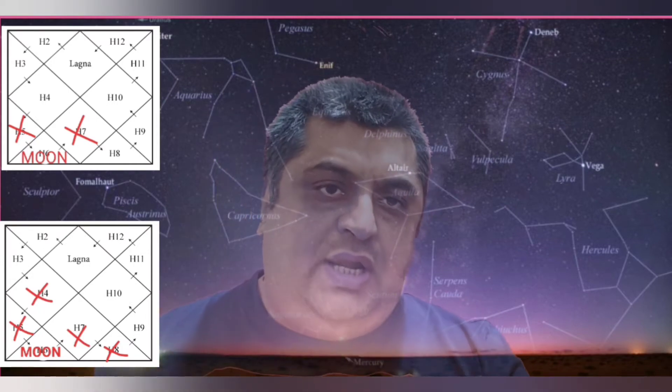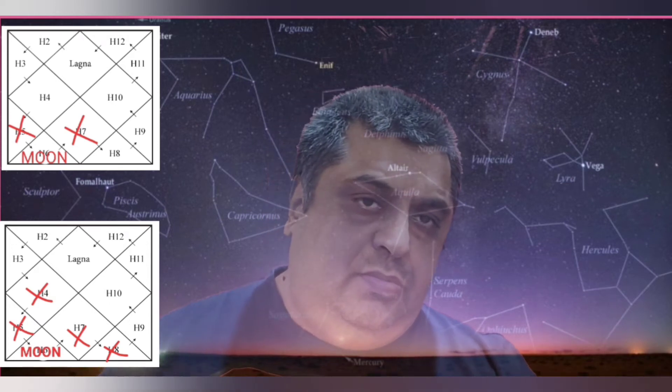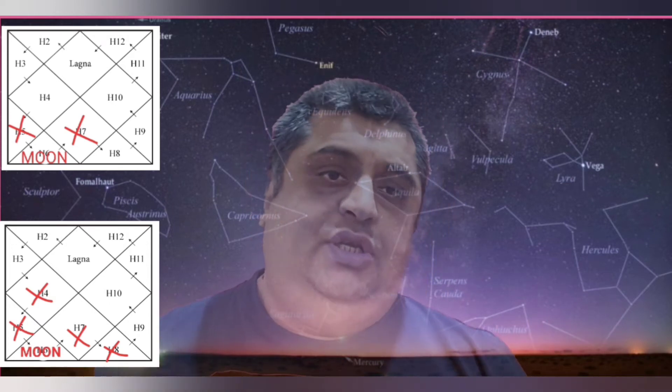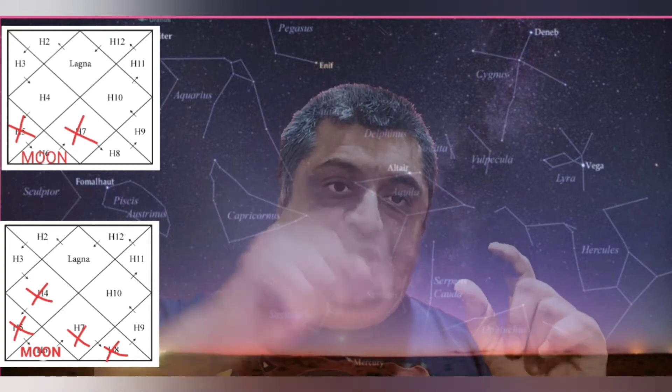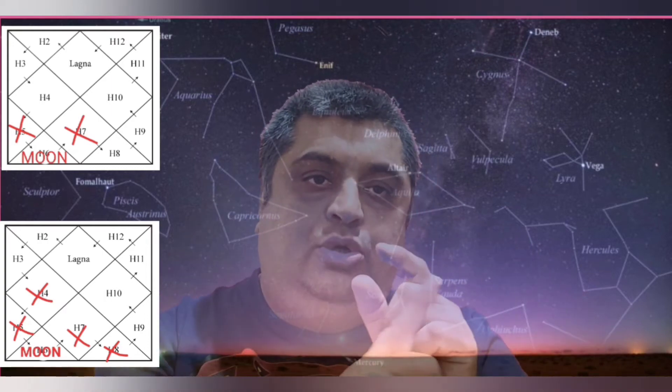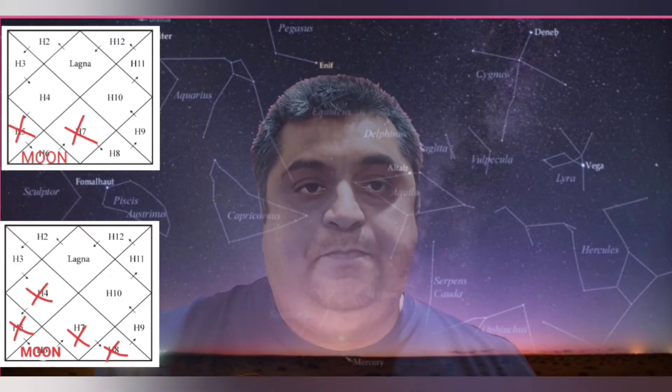When your Moon — other than the quadrants — is sitting alone without any planets one house ahead or two houses ahead, or one house by the side or two houses by the side, this dosha forms. Your Moon is sitting alone: no planets on two sides, or no planet on one side and no planet on the other side. This is the condition for Kemadrum Dosha to form.